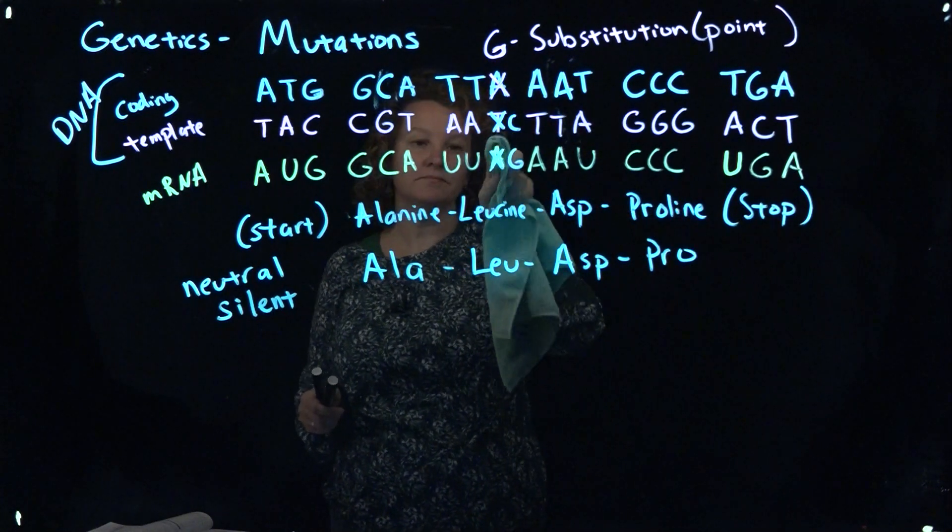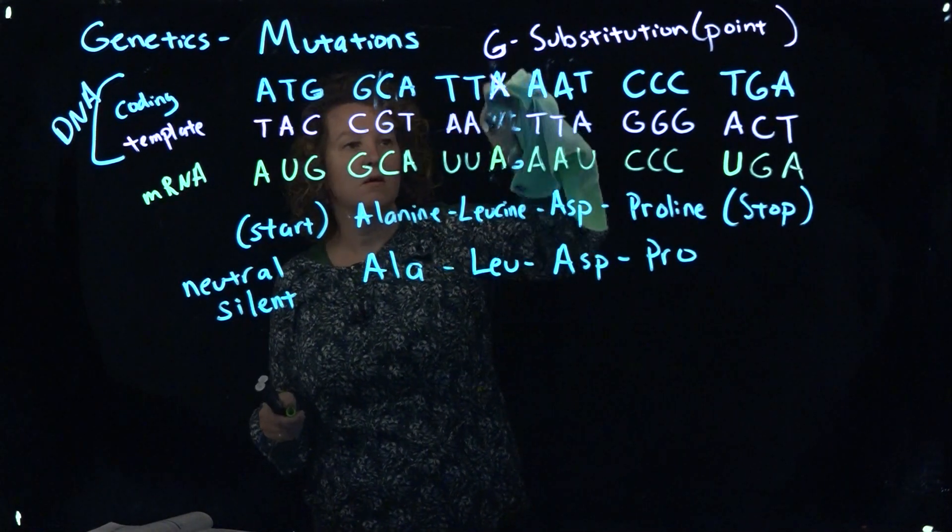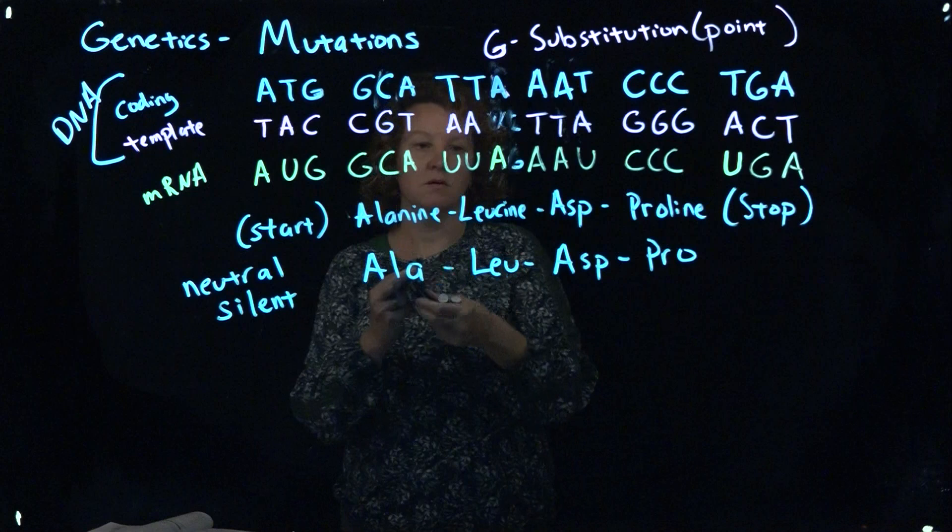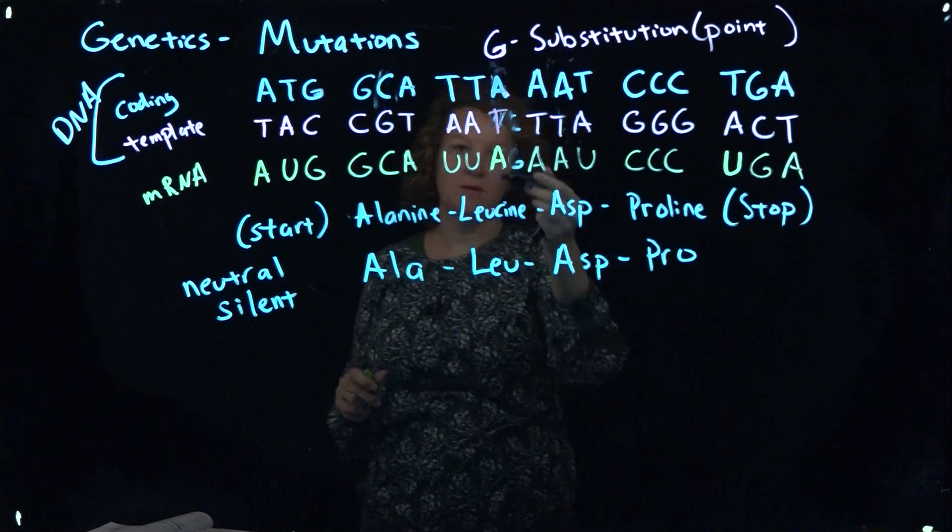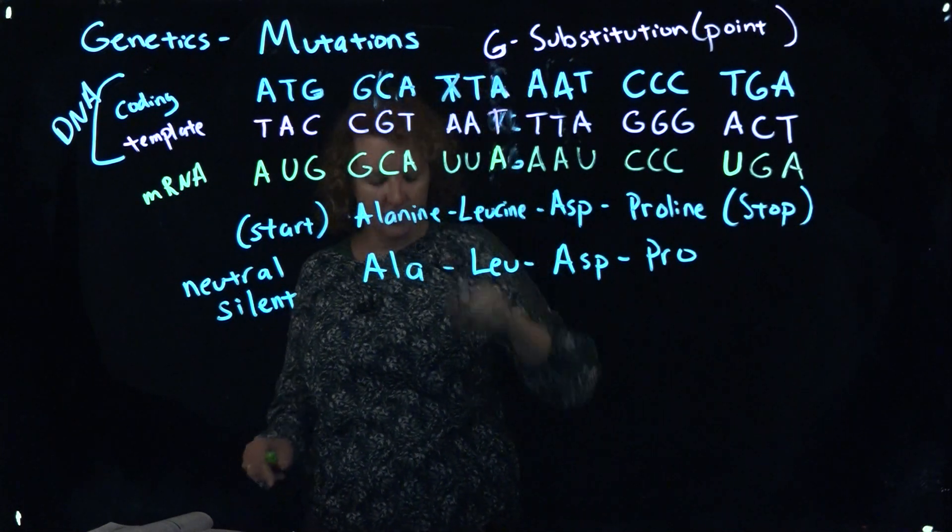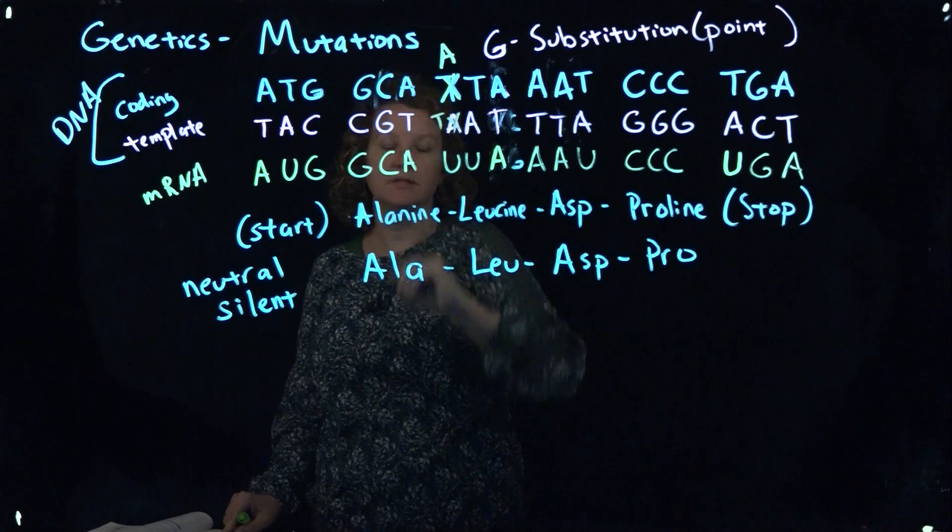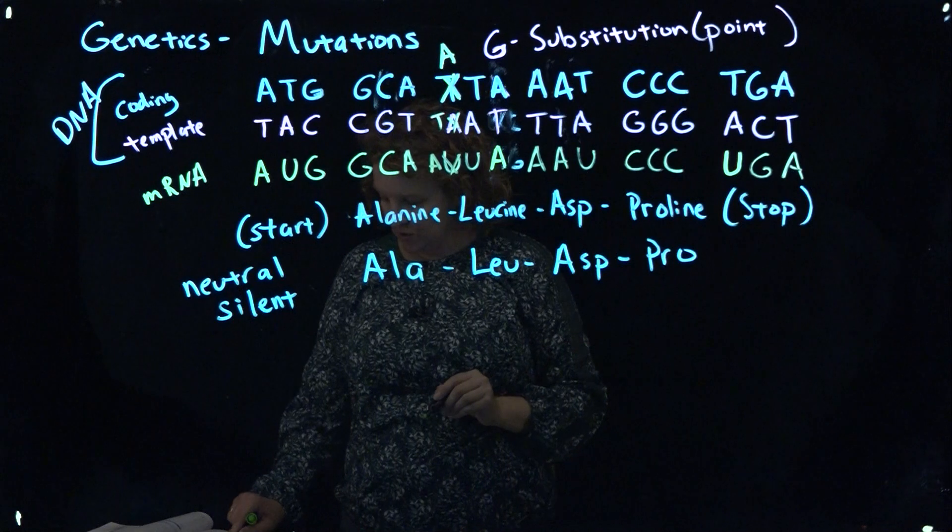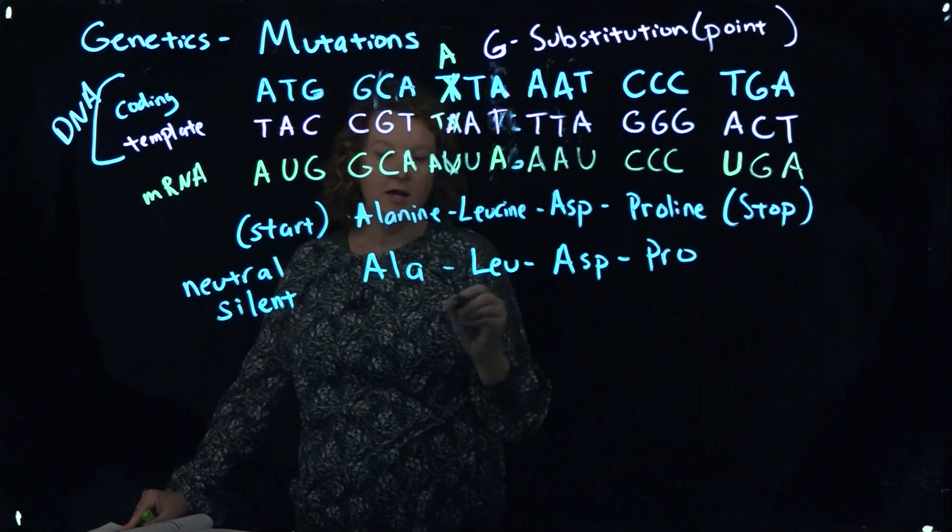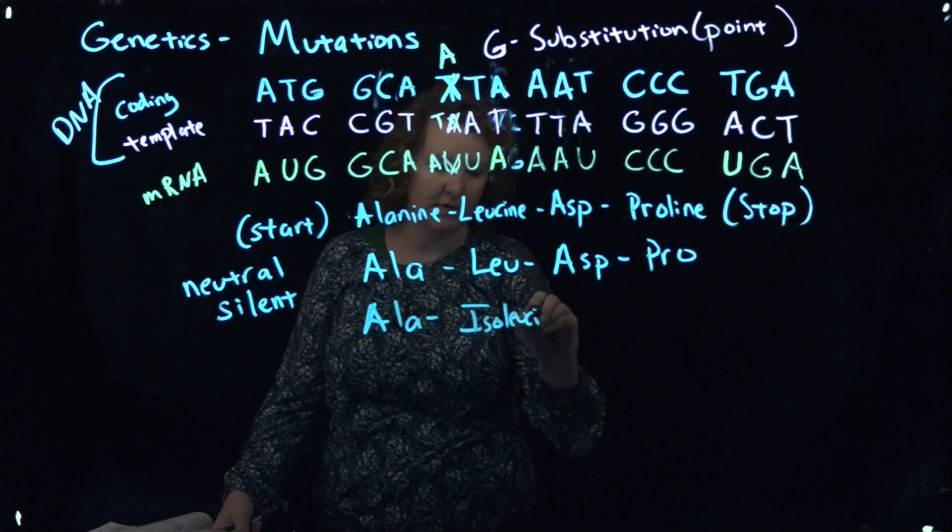Another possible change we could have - go back to my original sequence. Could be in a different base, perhaps. Let's say we made a change in the middle base, for example. I'm going to change this first one. A different point substitution mutation, just in a different spot. I'm going to make that an A, so this is ATA. Now this is a T that's there. When I come to code there, I'm going to put an A there, so I get AUA. When I go to the codon chart and look up AUA, instead of alanine, I get something called isoleucine, which is not the same amino acid.